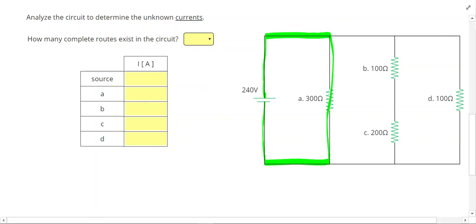For resistor A, I can do 240 volts using Ohm's Law again, divided by 300 Ohms. That gives us 0.8 Amps for A.